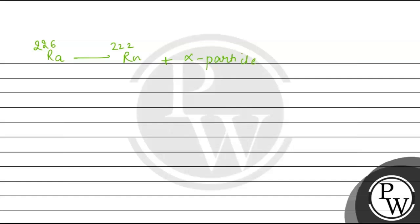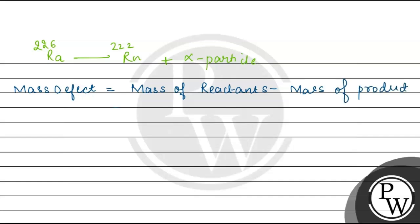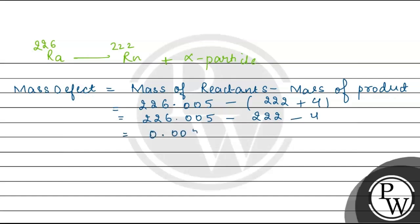We calculate the mass defect: mass defect = mass of reactants minus mass of products. Mass of reactants = 226.005 u, total mass of products = 222 + 4 = 226 u. So mass defect = 226.005 minus 226 = 0.005 u.